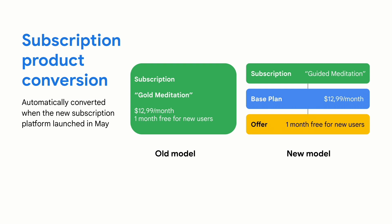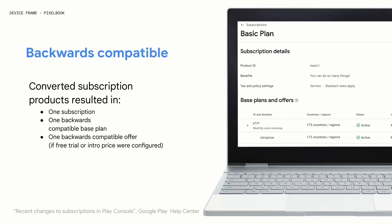Your pre-existing subscriptions before the launch were automatically converted to these new entities. Any existing subscriptions work exactly as before and are now represented by one subscription object with one backwards compatible base plan, and if you had a free trial, one backwards compatible offer. There can only be one combination of backwards compatible base plan and offer in each subscription, ensuring the system knows how to translate back to the older entities used by live versions of your app. Your converted subscriptions were also made read-only in the conversion process, to avoid any accidental changes.